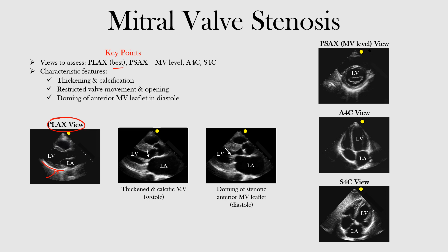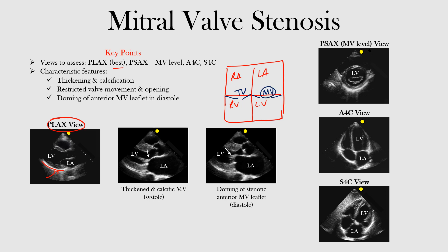Let's look at the different views and what we're looking for in terms of how to assess the mitral valve. The first one to focus on is the parasternal long axis view. Remember, the mitral valve is on the left side of the heart — the right atrium, right ventricle, left atrium, left ventricle — with the tricuspid valve on the right side. The mitral valve is on the left side. In the parasternal long axis view, here's our left atrium and left ventricle, and the mitral valve is right between them.